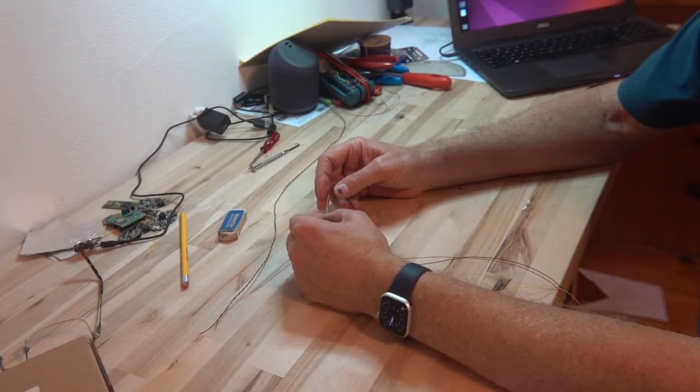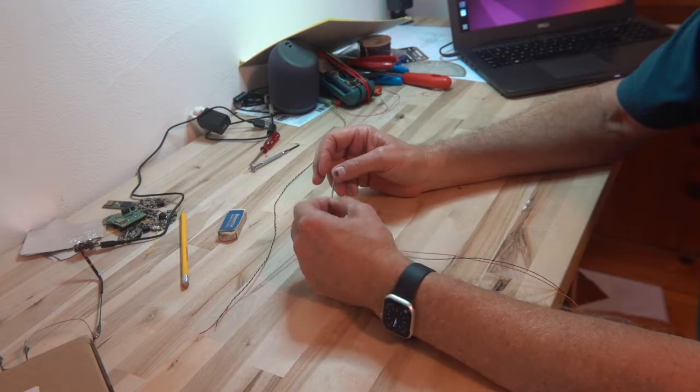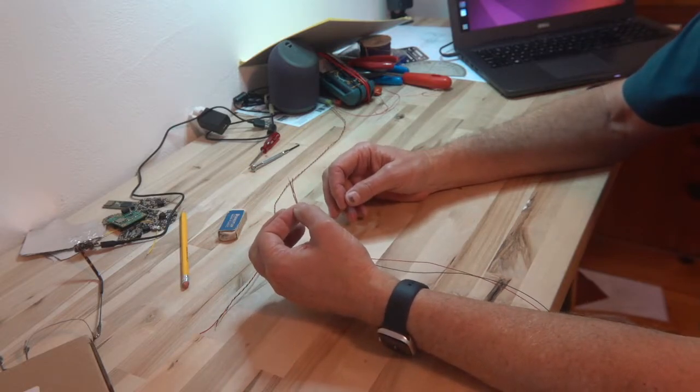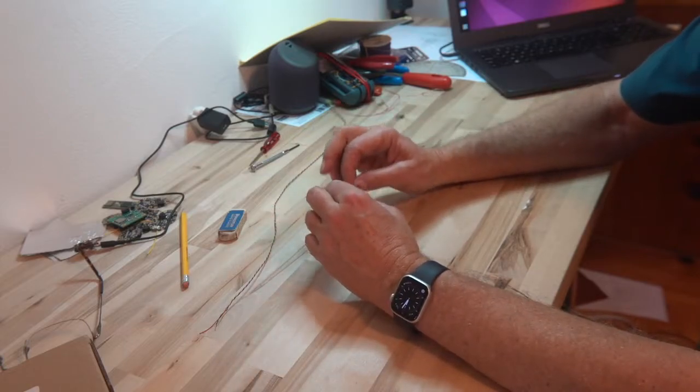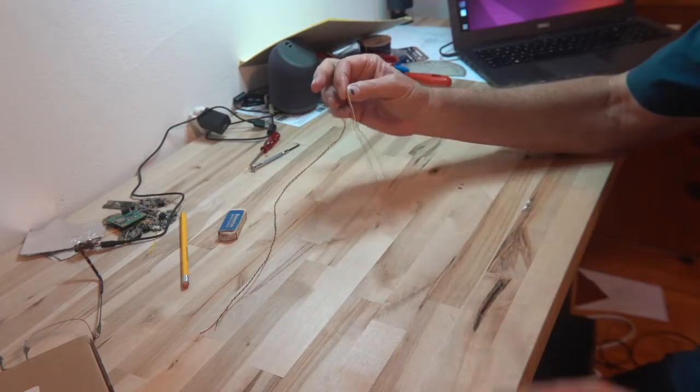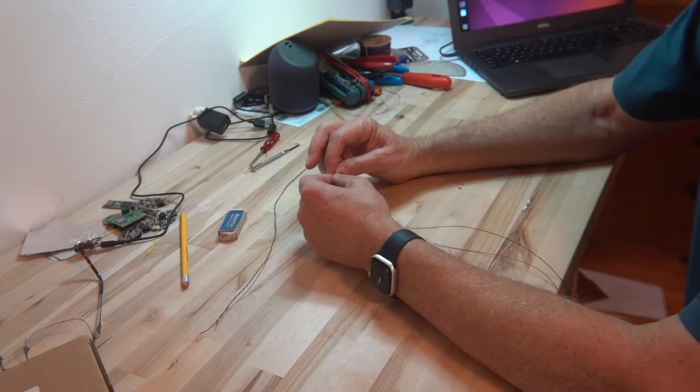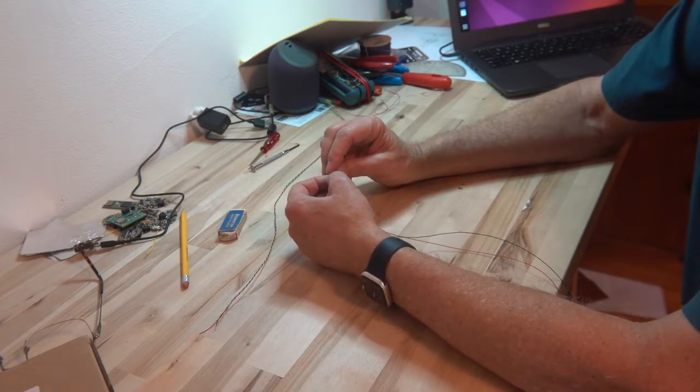Now you need wires to connect your Gemma M0 boards to your Teensy, and so you can buy wires with three conductors in them or you can make your own. I've got some here that are wire wrap wires. I like these because they're super fine, they're like 32 gauge and they're very flexible.